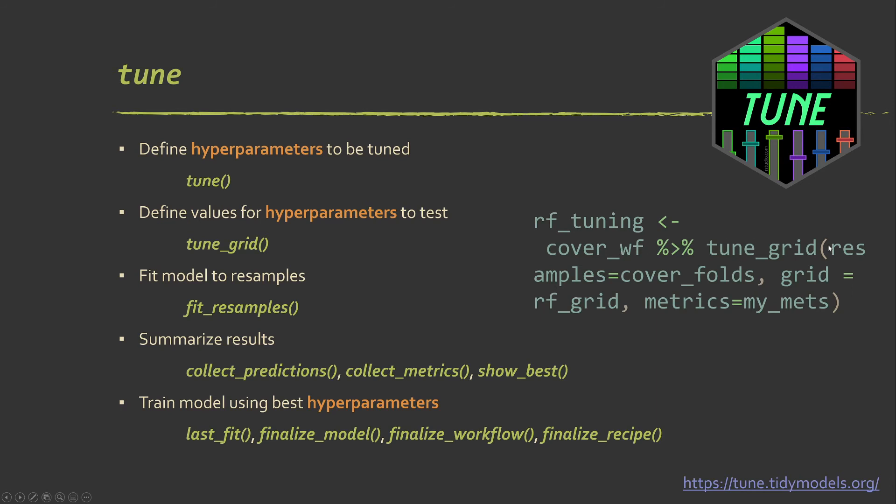So here's an example for tuning. So we have a workflow that's the model plus the preprocessing pipeline. We push that into the tune grid function. We tell it what resamples that we're going to use, which would have been defined with R sample. What grid we're going to use, that's going to be the set of variables to try. And then what metrics that we want to report back. So that's the tuning process.